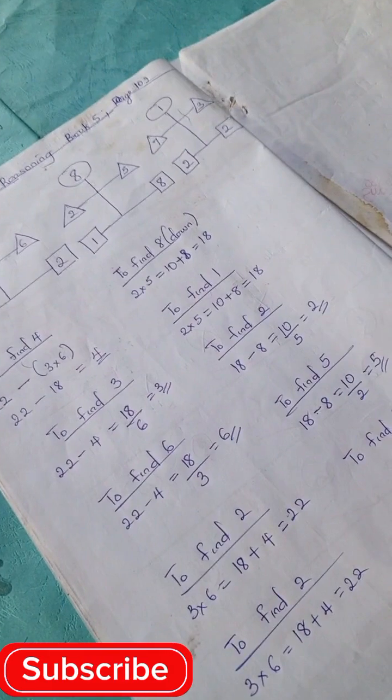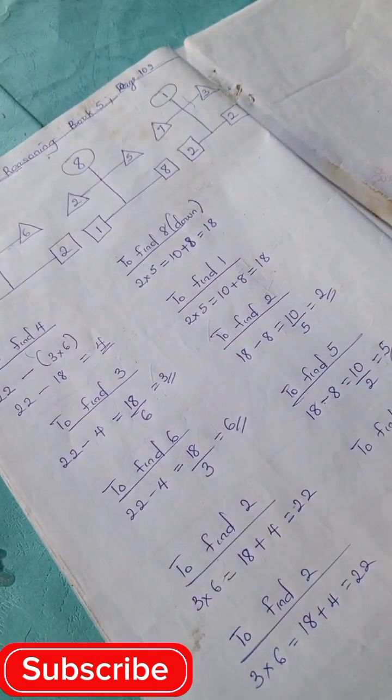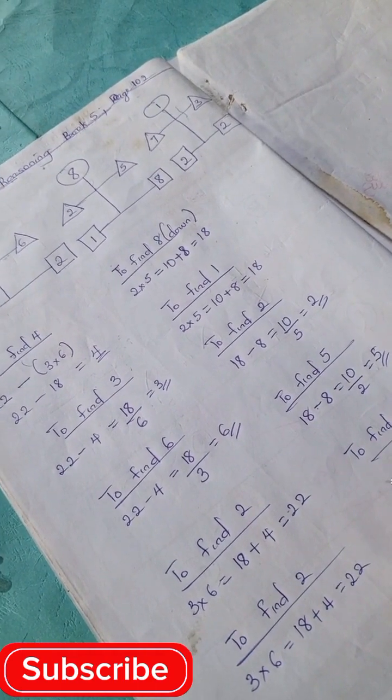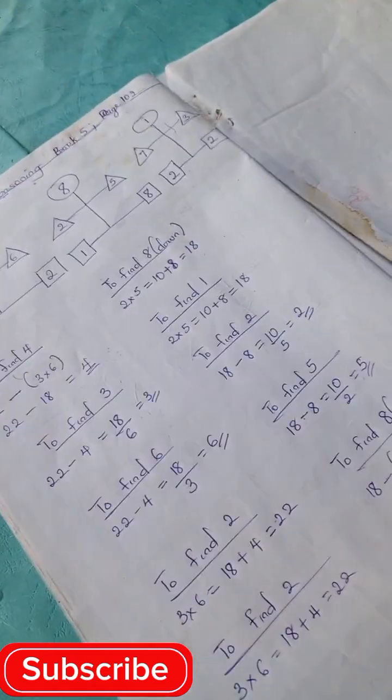To find 8 up, we have 18 minus 2 times 5.